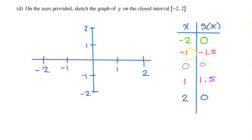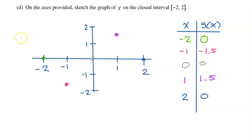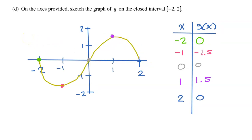Let's plot these points on the graph and see what we've got. We draw a smooth curve through these points to get the final answer. This is the sketch of g on the closed interval from negative two to positive two.